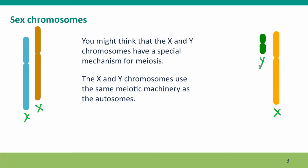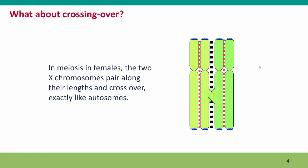You might think that these chromosomes have some sort of special mechanism to get themselves properly through meiosis, but really they don't. They use the same meiotic machinery that the autosomes use, but they have to do something kind of special in order to be able to use this machinery. For the two X chromosomes in females, there's no problem. As far as meiosis is concerned, the X chromosomes are just another pair of autosomes — they're fully homologous along their length, and they can pair and cross over exactly the same as autosomes.